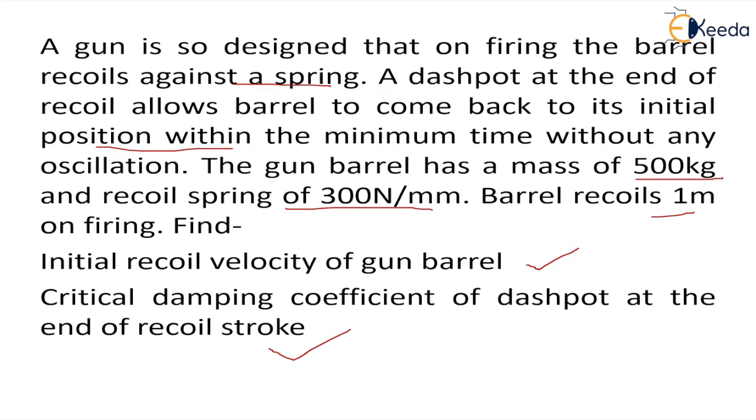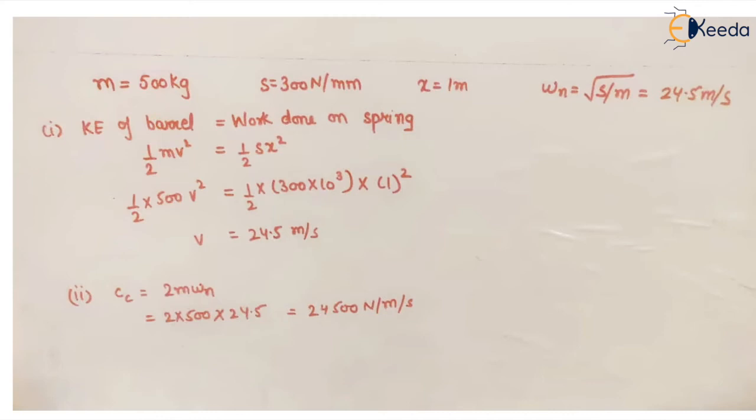We are already given the mass, we are given the spring stiffness, we know the distance it is going up to—the recoil is up to one meter—and the natural frequency of system is omega n, which is under root s upon m.